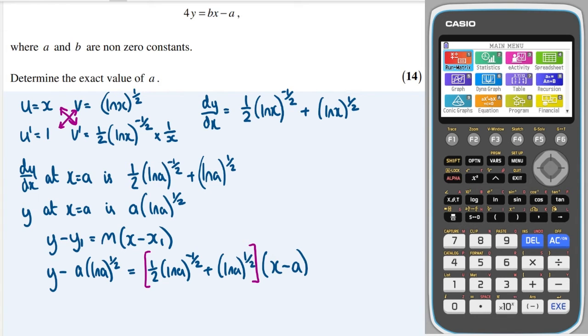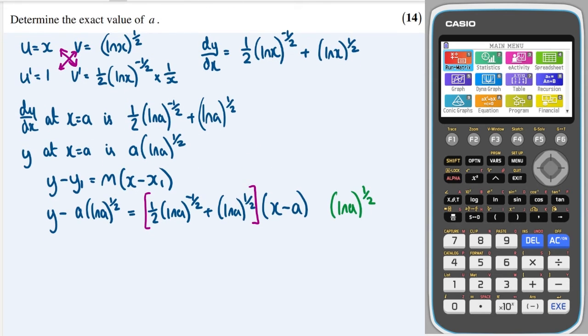Okay, great. So my first thought is this is very messy, and what I would like to do is to multiply through completely by (ln a) to the power of a half. I think that's going to tidy things up massively. So let's do that. Let's multiply through by that.